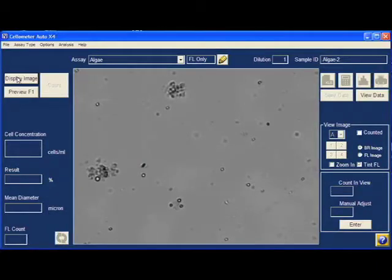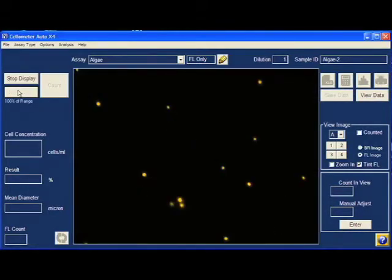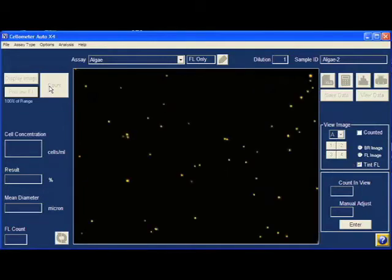When the chamber is inside Cellometer AutoX4, a bright field image of the algae sample is shown. Red fluorescent cells are algae cells. Click count to automatically start cell counting.